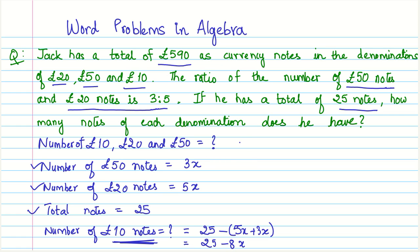Now let us see how we can form the equation. We are given that he has a total of £590, so we need to find out how much each of these is contributing to the £590. From £50 notes, the amount he will have would be equal to 50 multiplied by 3x, so that gives us 150x. This is the amount of money contributed by the number of £50 notes that he has.